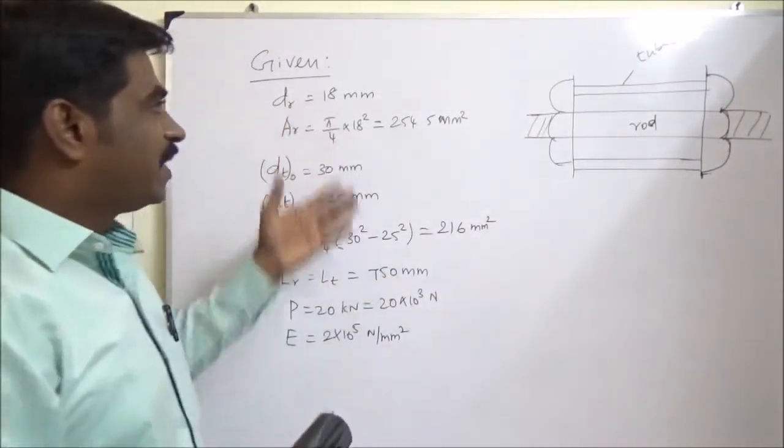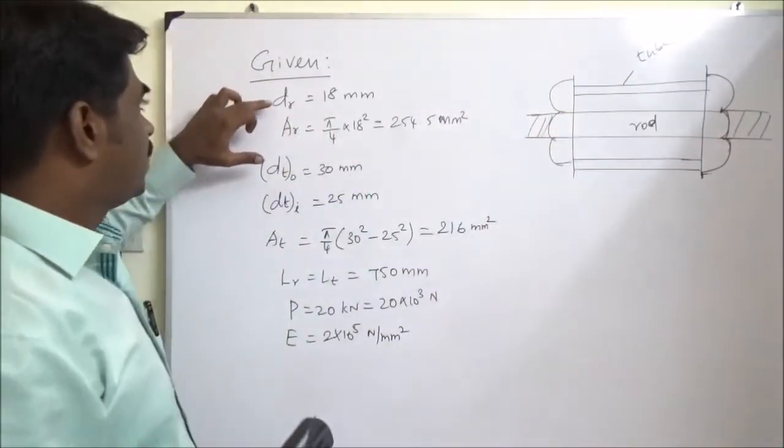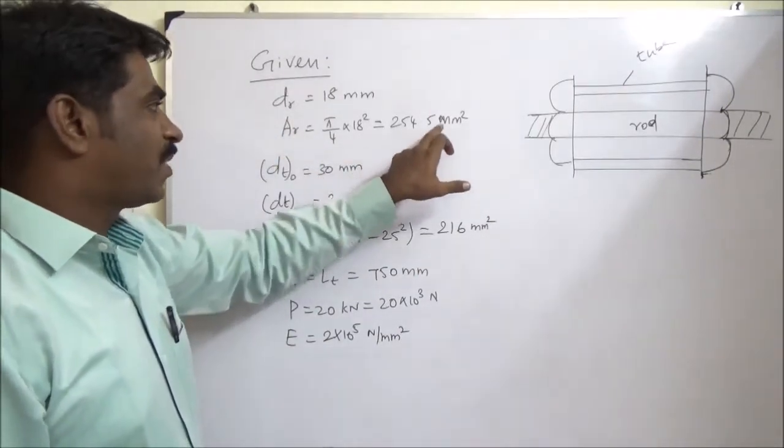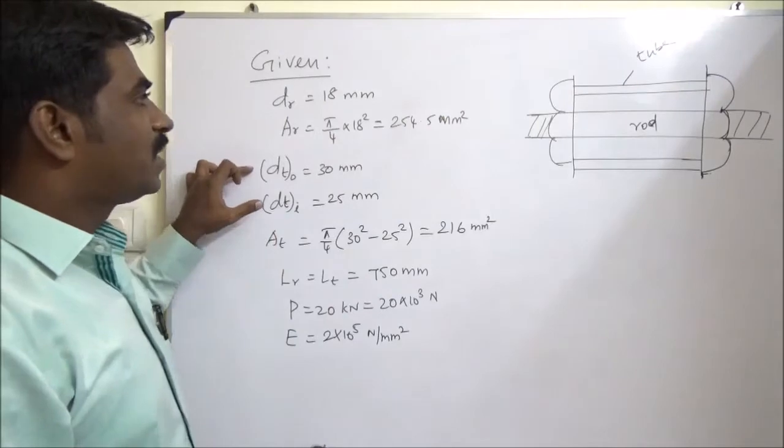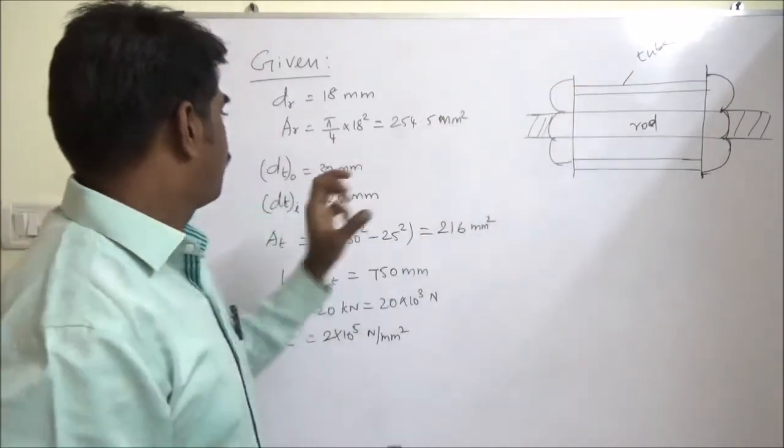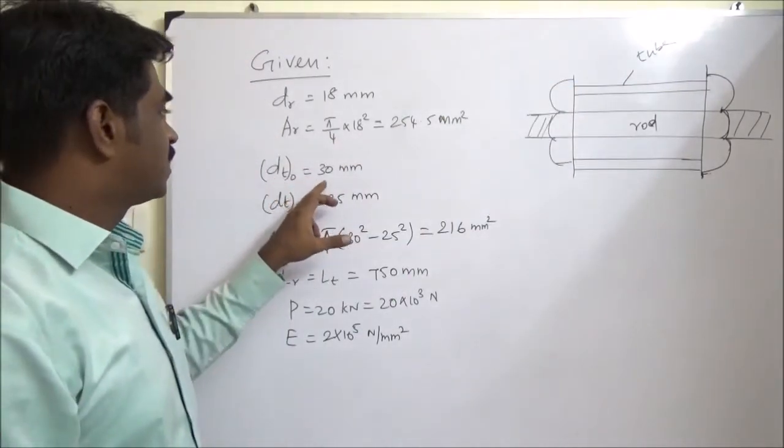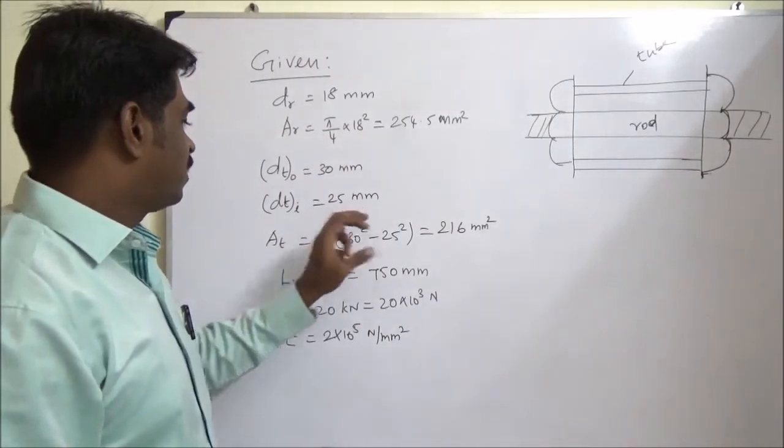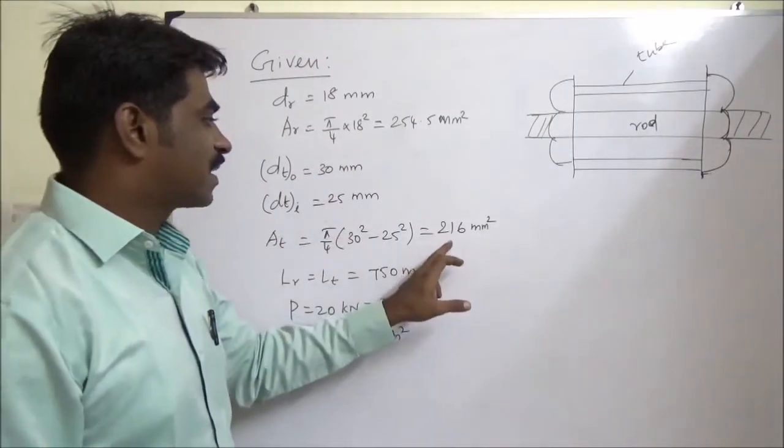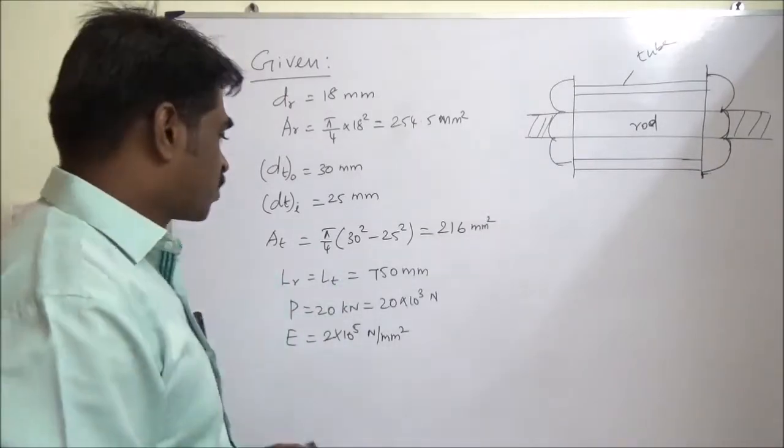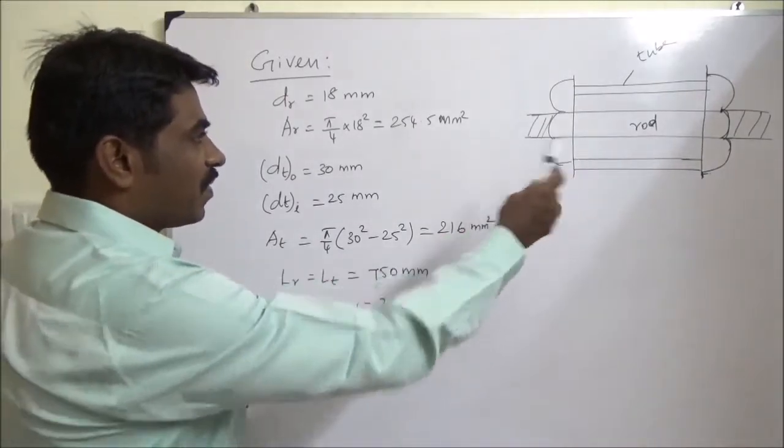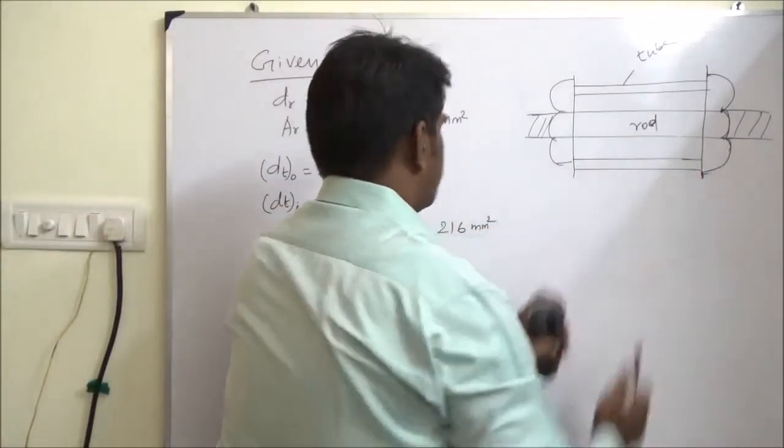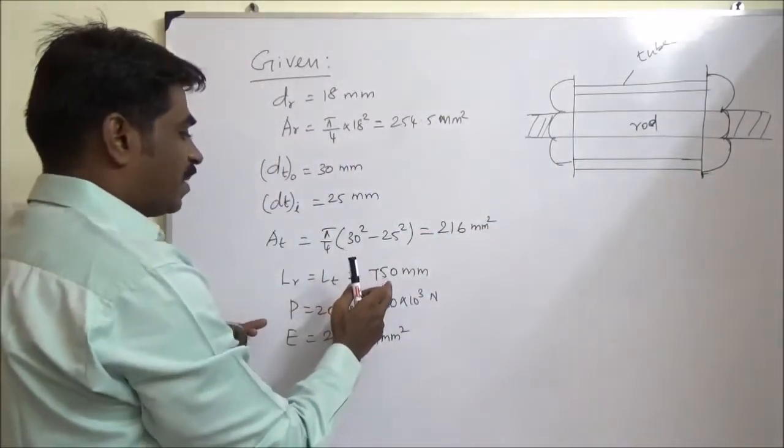These are the given data. So the rod diameter is 18 mm, so the area is 254.5. The outer diameter of the tube is 30 mm, the inner diameter is 25 mm, so the area is calculated as 216 mm square. The length of the rod and the tube is given as 750 mm.